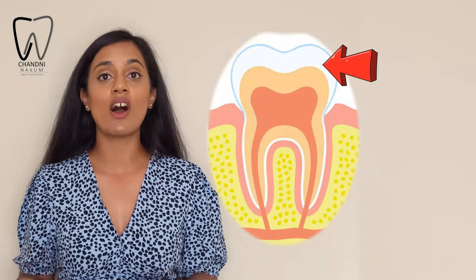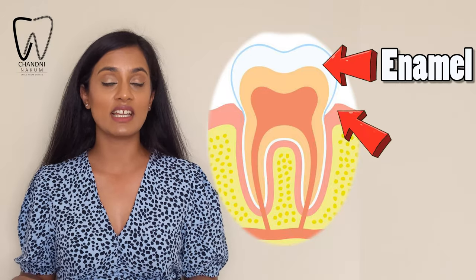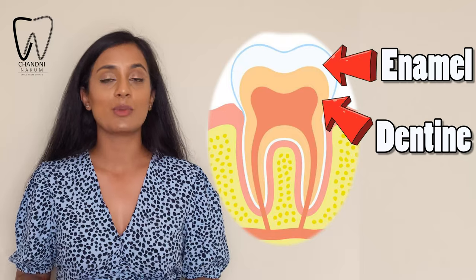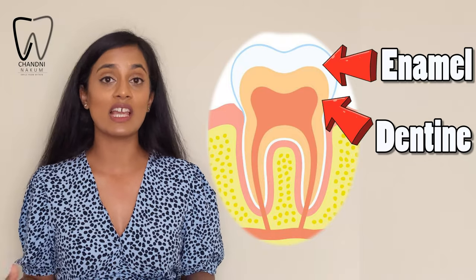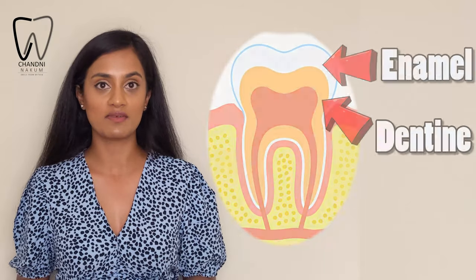What is tooth decay and why does it happen? Tooth decay happens when the enamel, which is the hard outer coating of the tooth, and the dentine, which is the layer just inside the enamel, becomes softened by acid from food and drink that has a lot of sugar in it. Now that is not to say that anything acidic — for example lemon or oranges — will cause decay. This is likely to lead to tooth erosion, which is completely different to tooth decay.